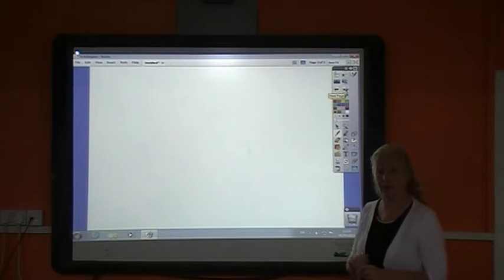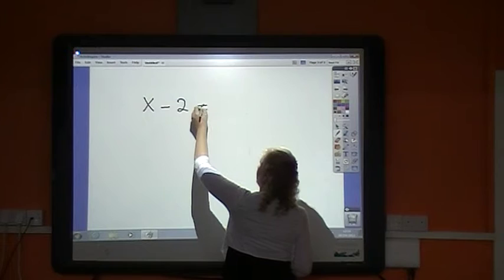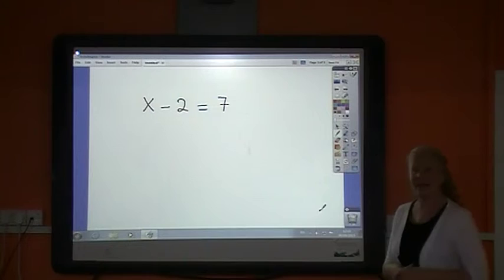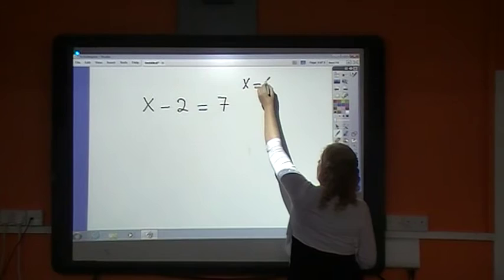Slightly harder. x minus 2 equals 7. Again, my whole goal is to get x equals a number.